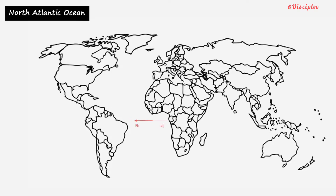The steady trade winds constantly drift two streams of water from east to west. At the shoulder of northeast Brazil, the protruding land mass splits the south equatorial current into the Sainé current, which flows along the Guyana coast, and the Brazilian current, which flows southwards along the east coast of Brazil.